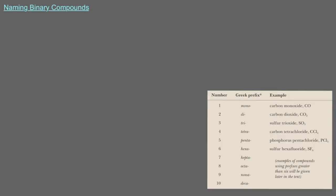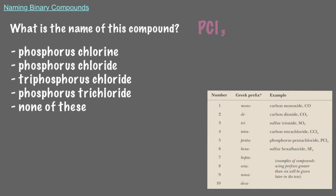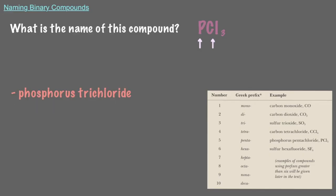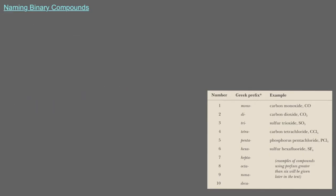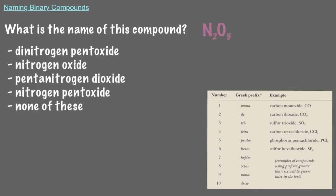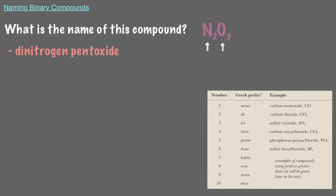Let's take a look at a few examples. What is the name of this compound? That's right, since we have one phosphorus and three chlorines, the name of this compound is phosphorus trichloride. Let's try another one. What is the name of this compound? Since this compound has two nitrogens and five oxygens, we call it dinitrogen pentoxide.